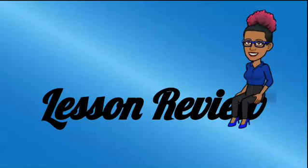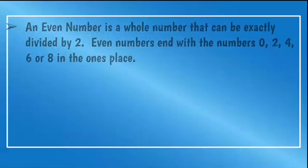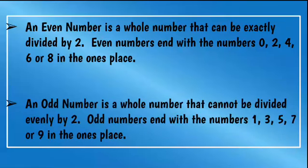Let's review what we've learned. An even number is a whole number that can be exactly divided by 2. Even numbers end with the number 0, 2, 4, 6, or 8 in the ones place — meaning divided by 2 without any remainder. An odd number is a whole number that cannot be divided evenly by 2, meaning there will be a remainder. Odd numbers end with the numbers 1, 3, 5, 7, or 9 in the ones place.